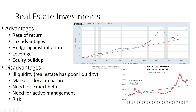A key disadvantage is illiquidity — real estate has poor liquidity and it's hard to convert into cash quickly. The market is also local in nature. You'll need expert help when getting into investment property, and once you've bought it you'll probably need ongoing help to actively manage it. There are also different types of risk involved.